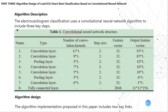The second component is the algorithm design. The algorithm implementation proposed in this paper includes two key stages. The first is the training and learning stage for the convolutional neural network. The second is to test and verify the trained convolutional neural network. The specific description of each stage is as follows.